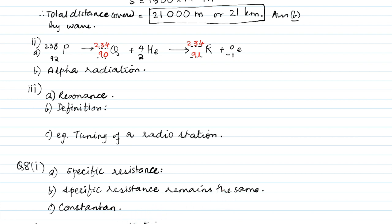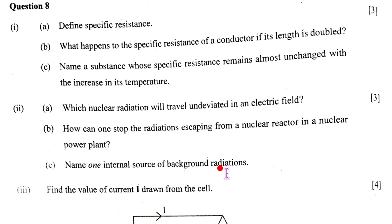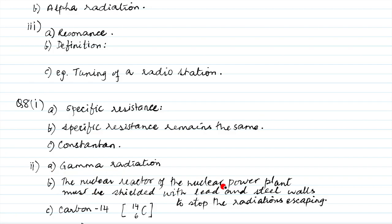Question 8, second subpart A: Gamma radiation travels undeviated in an electric field because it is uncharged. Part B: To stop radiations escaping from a nuclear reactor, the reactor is shielded with thick walls of lead and iron. Part C: One internal source of background radiation is carbon-14 present inside our body.